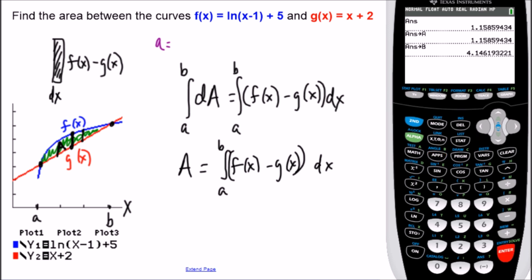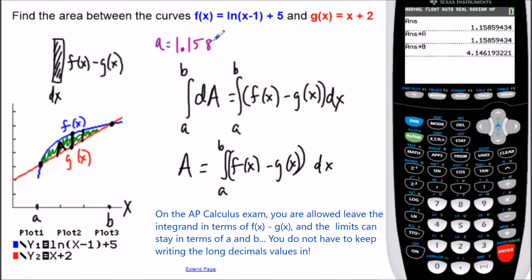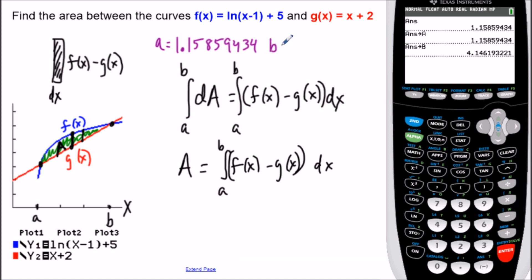So what we'll do, just so we have everything organized, we're only going to write the A value and B value once. So we got 1.15859434. And then B is equal to 4.146193221. So now anytime I write A and B, I'm defining them here. I don't have to write them again. This integral now represents this function f of x in blue and this function g of x in red. And then A and B represent these values defined. So the rest is going to be all calculator work.